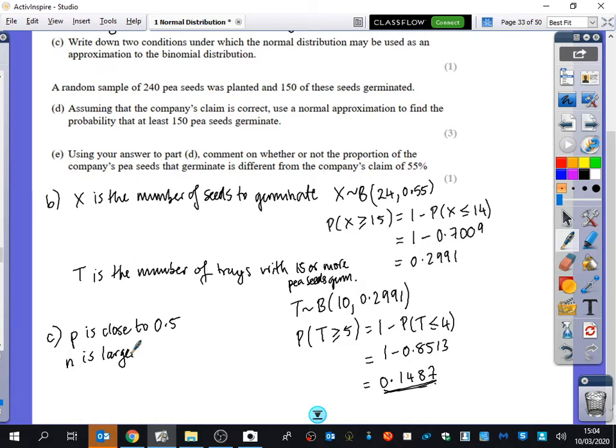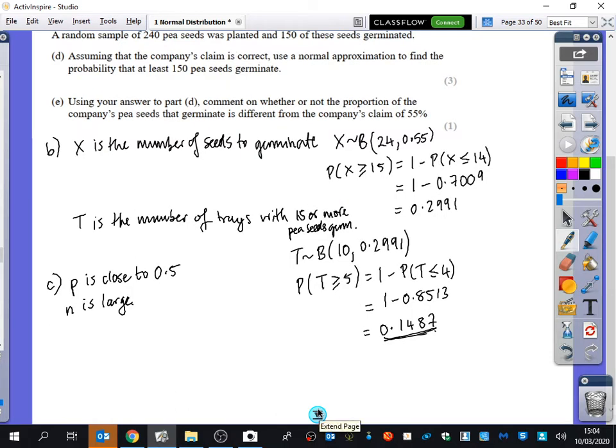It then says a random sample of 240 pea seeds. So this is what N is going to be, was planted and 150 of these seeds germinated. Assuming that the company's claim is correct, use a normal approximation. They might have said a suitable approximation to find the probability that at least 150 pea seeds germinate. So now we can say, well, we thought that the binomial distribution would have been 240 and 0.55. But we're going to actually find out what the normal distribution is.